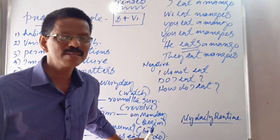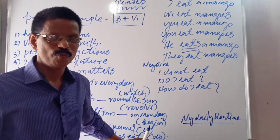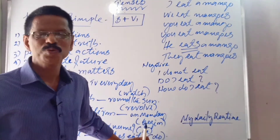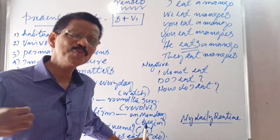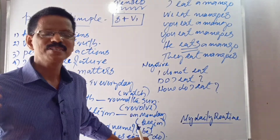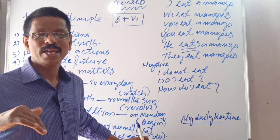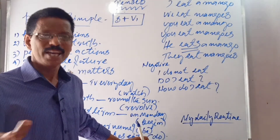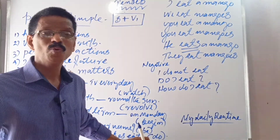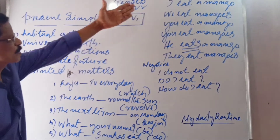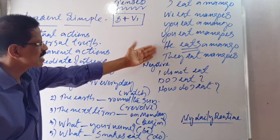Present Simple means Subject plus V1. When V1 is used, remember to add S or ES with third person singular. I eat, we eat, you eat, he eats, they eat. He studies, he plays, he sleeps, he comes, he goes — he means any man, she means any woman.